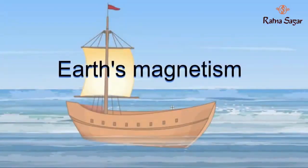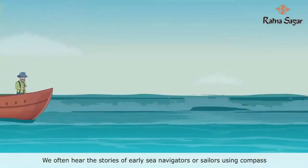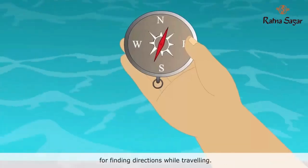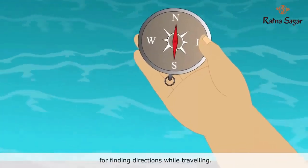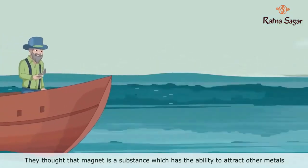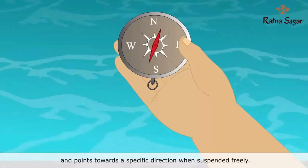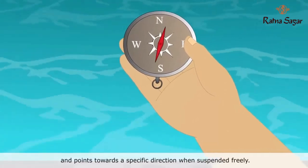Earth's Magnetism. We often hear the stories of early sea navigators or sailors using compass for finding directions while travelling. They thought that magnet is a substance which has the ability to attract other metals and points towards a specific direction when suspended freely.